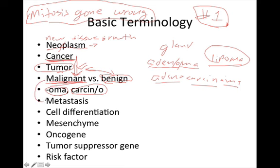Malignant tumors are capable of metastasizing. Metastasis simply means the tumor is spreading. Whenever you see the word 'metastasis' or 'metastasize,' that's not a term used to describe benign tumors — metastasis is used specifically for malignant tumors.